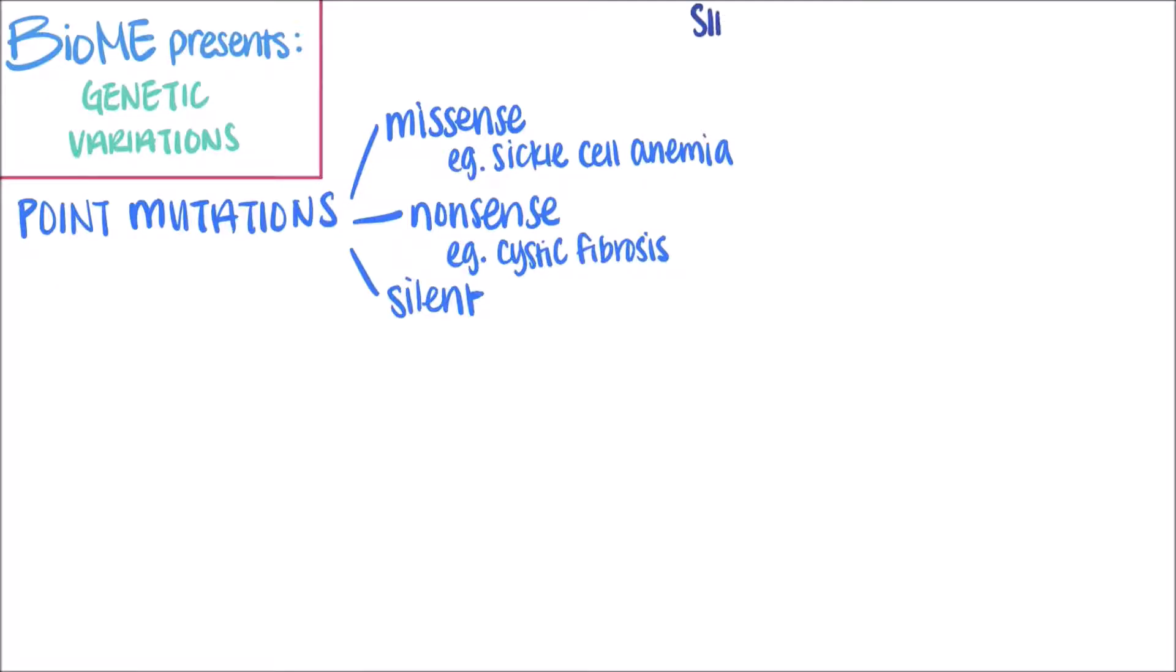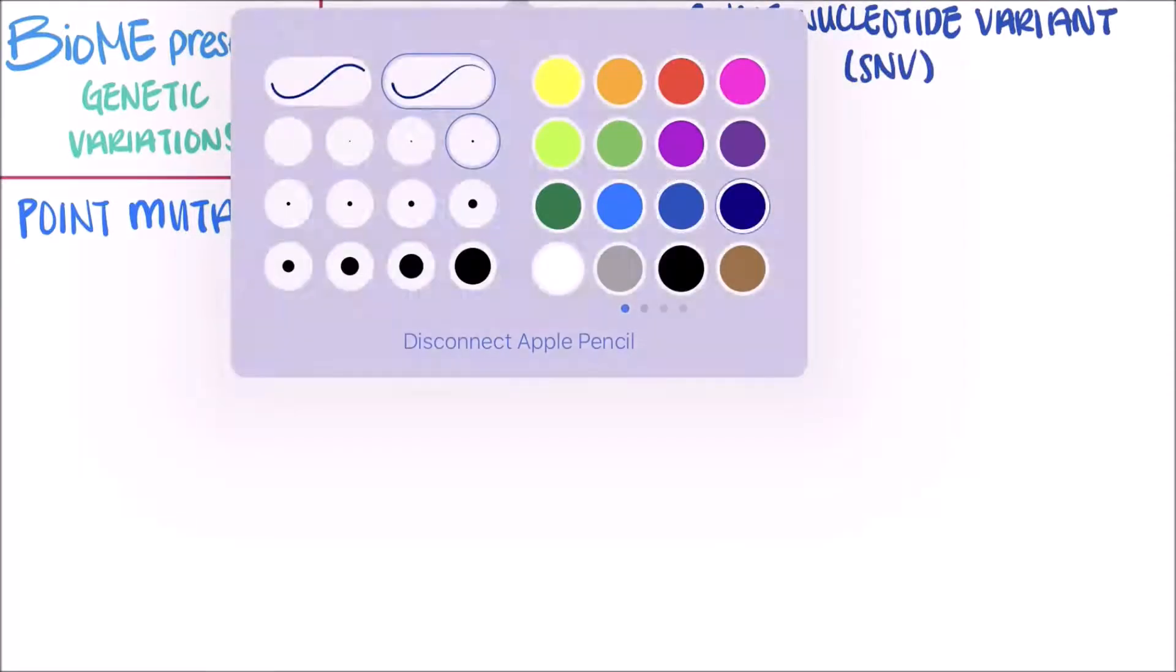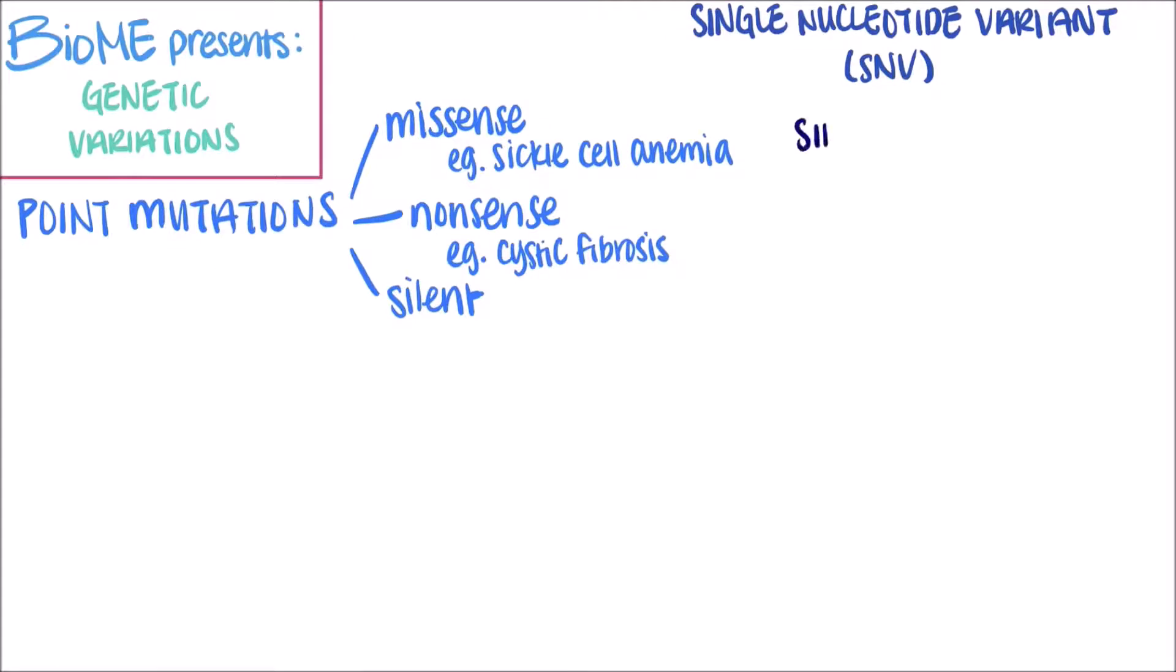These kinds of single base substitutions can also be described as single nucleotide variants. These are often shortened as SNVs. When a particular variant occurs in more than 1% of the general population, they are referred to as single nucleotide polymorphisms, or SNPs.